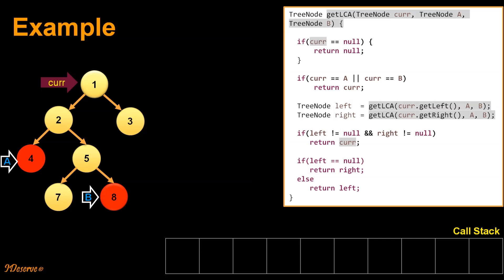We will understand and visualize the algorithm through an example. First, let's take a quick look at the code. The getLCA method takes three inputs: the first is the current tree node, and the second and third parameters are tree nodes A and B for which we have to find the LCA. If the current node is null, we return null. If the current node is either A or B, we return the current node. Otherwise, we search for node A or B in the left subtree and then in the right subtree. If we find nodes in both left and right subtrees, the current node is the LCA. Otherwise, we return the left node if A or B was found in the left subtree, or else return the right node.